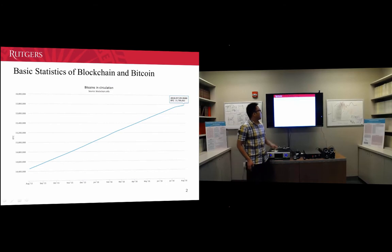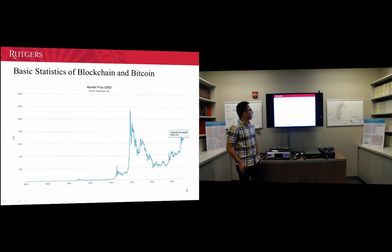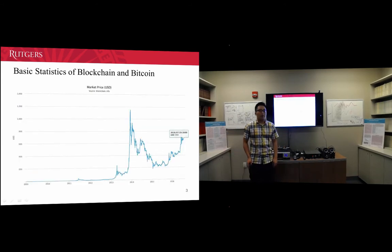As you can see here, currently we have 15 million bitcoins in circulation and the price is around $600.